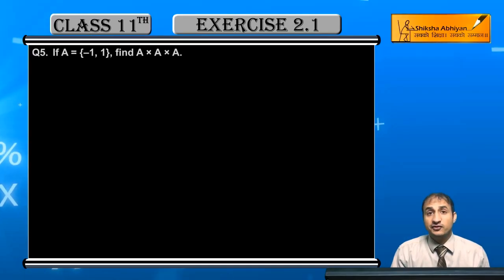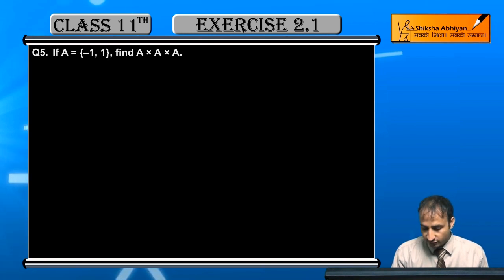Now student, the fifth question is: if A is equal to minus 1 comma 1, then find A cross A cross A.